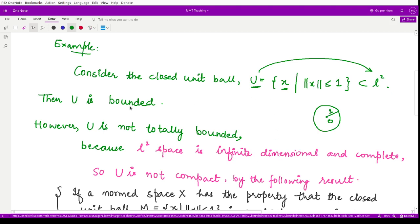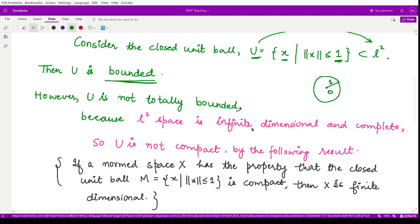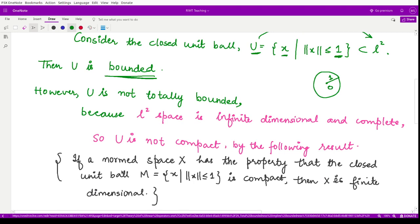In this case, the set U is bounded because all elements have norm less than or equal to one, which forms the bound for set U. However, set U is not totally bounded. We can see this through a theorem we have learned.